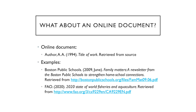For an online document, the same pattern applies: author, year, title of work, retrieved from source. If there's no individual person as author, it's acceptable to use an organization — for example, Boston Public Schools. For newsletters, you can list the month with the year. Another example: FAO, 2020, State of the World Fisheries and Aquaculture, retrieved from the URL.